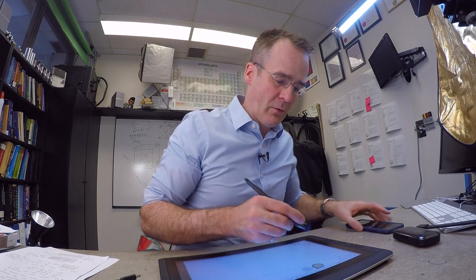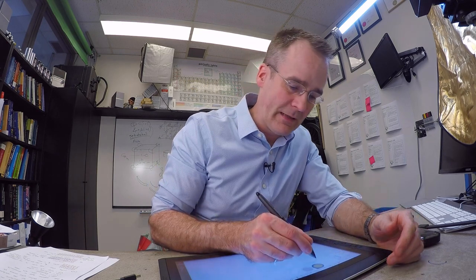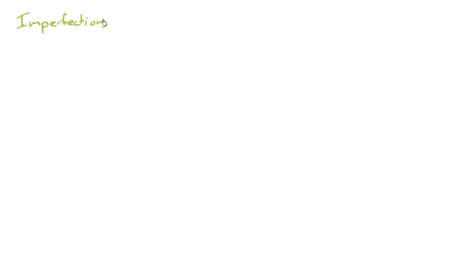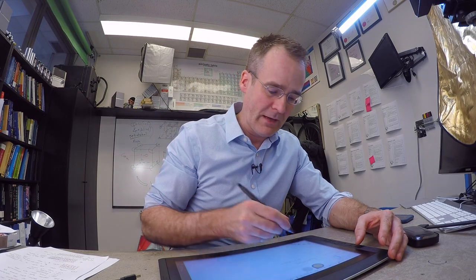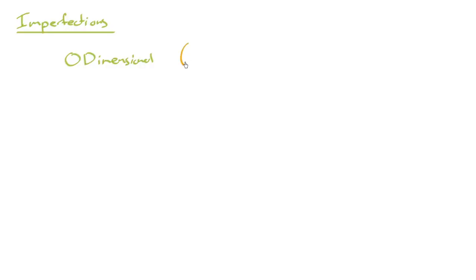One thing we can do — the way I like to look at imperfections — is to organize them according to their dimensionality. That is, how many dimensions in space do they occupy? This is fairly frequently done. Zero-dimensional would be things that only occupy one point in the lattice, and in fact you might call that a point defect.